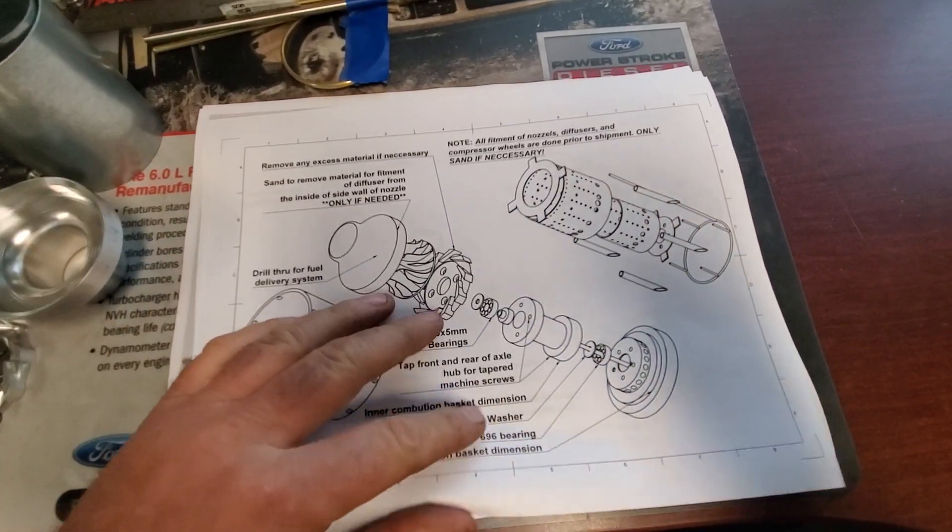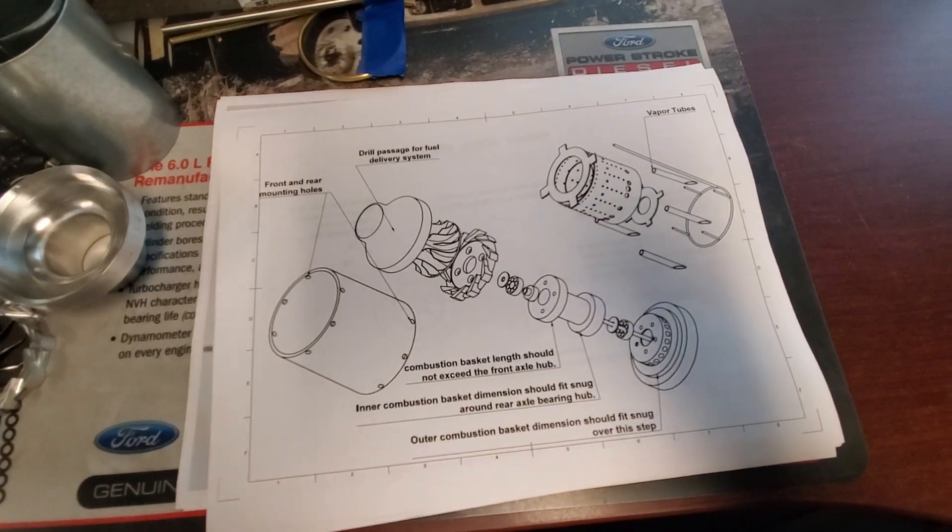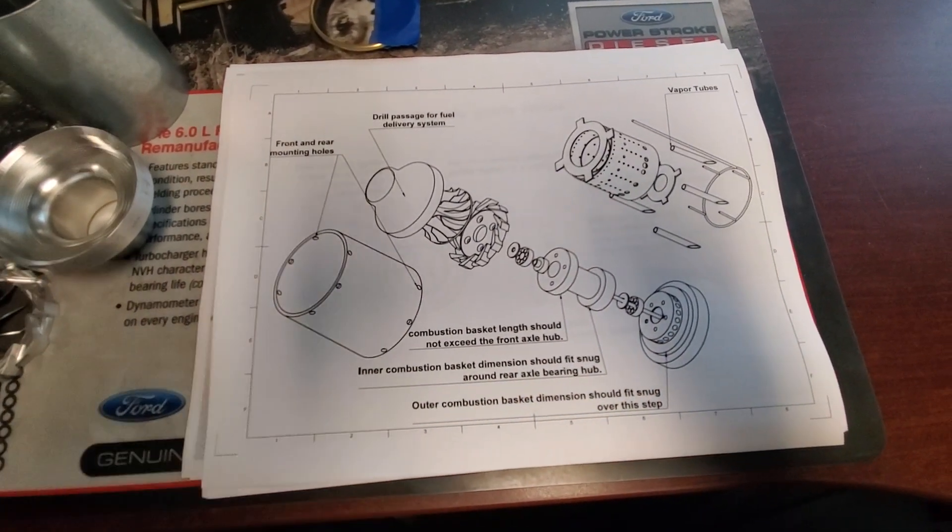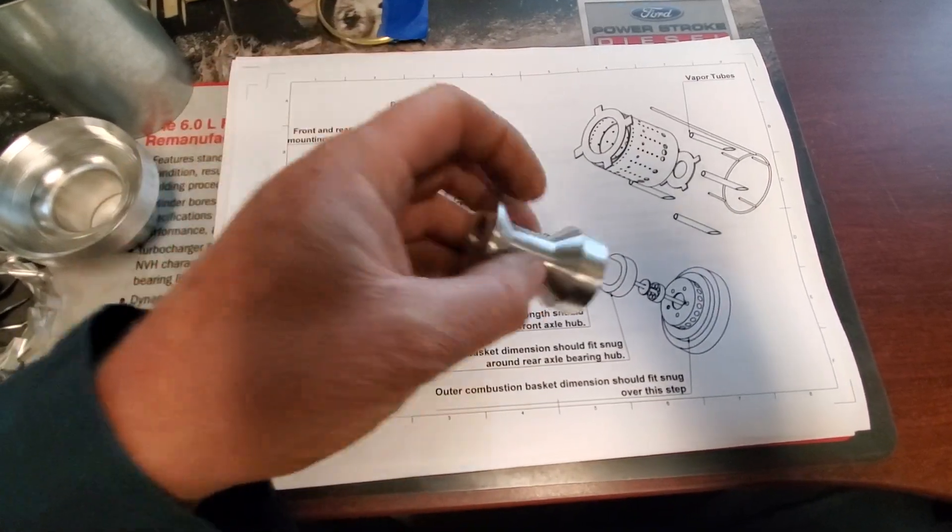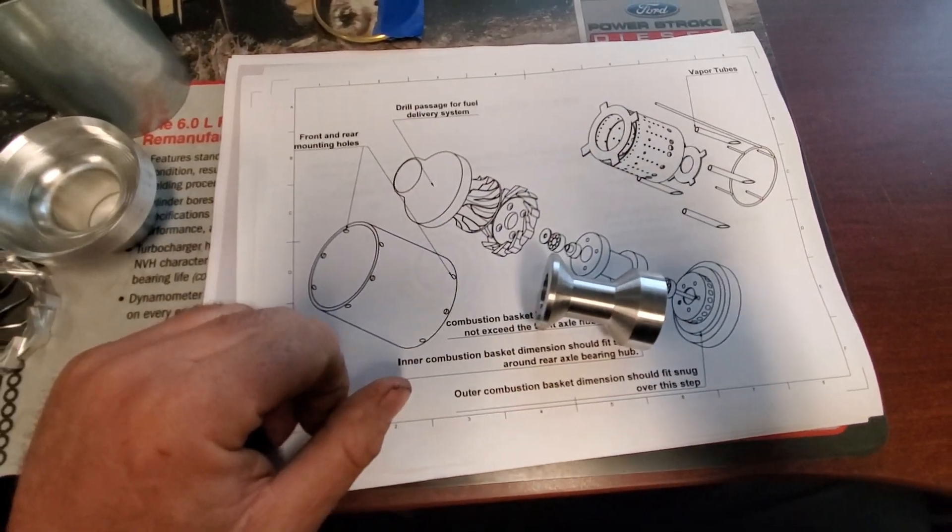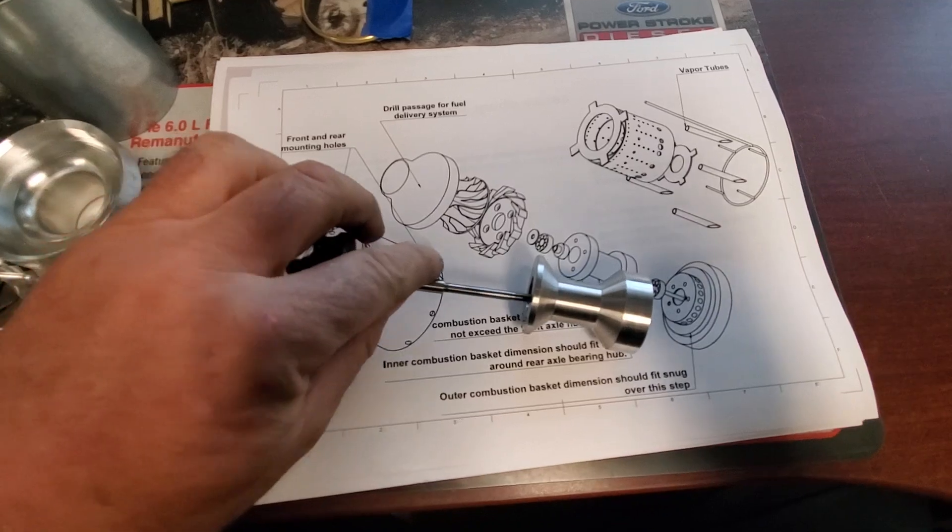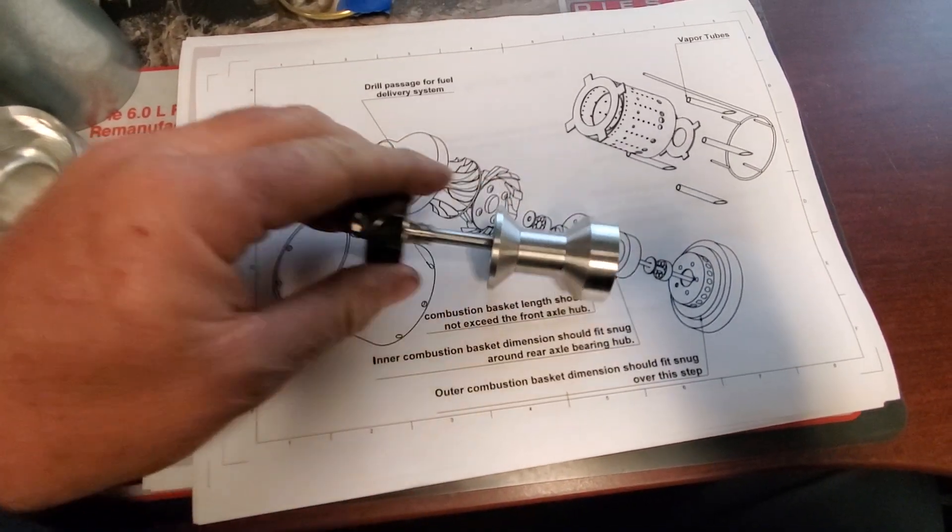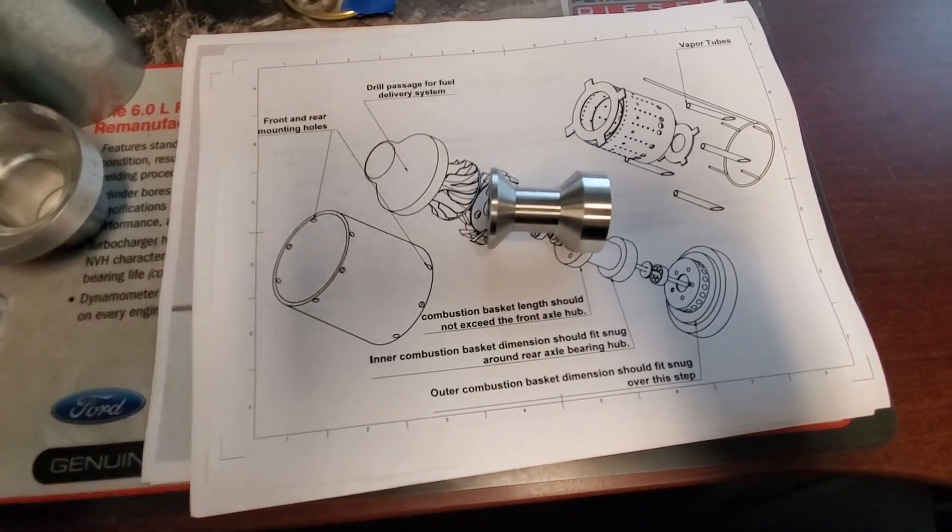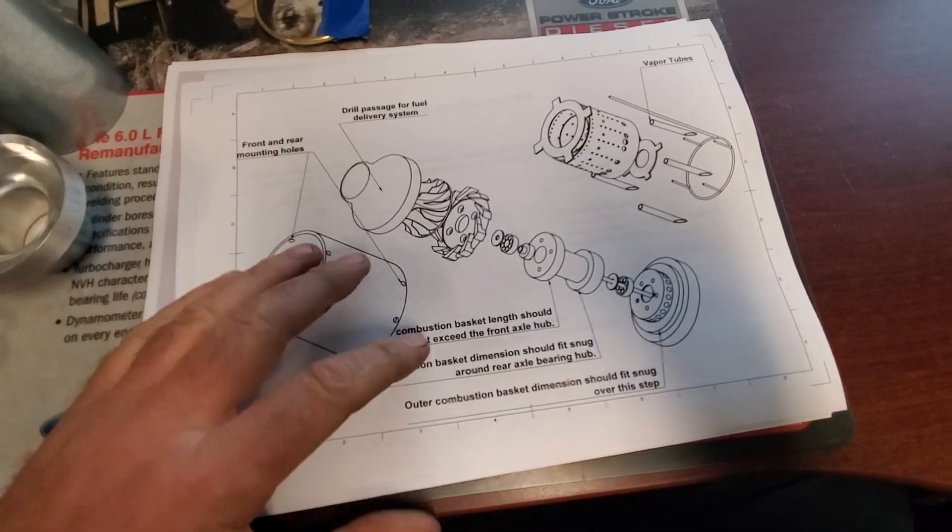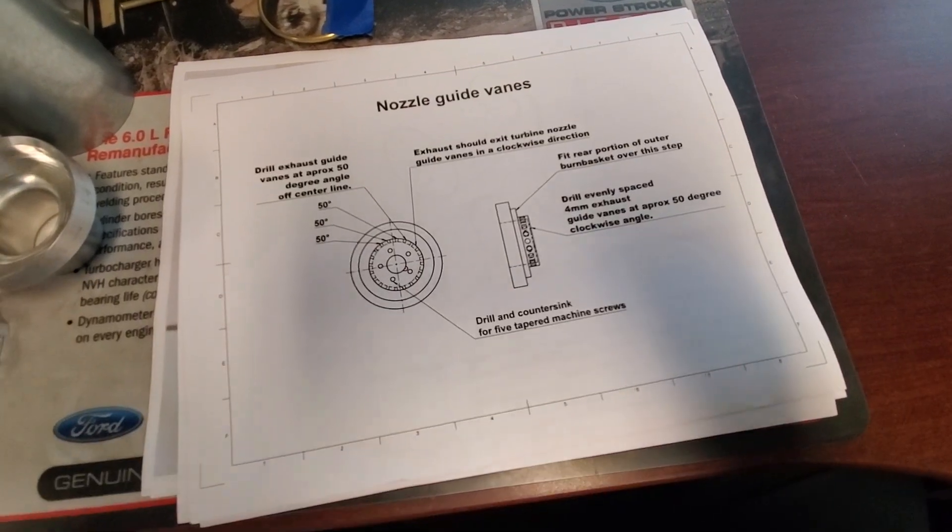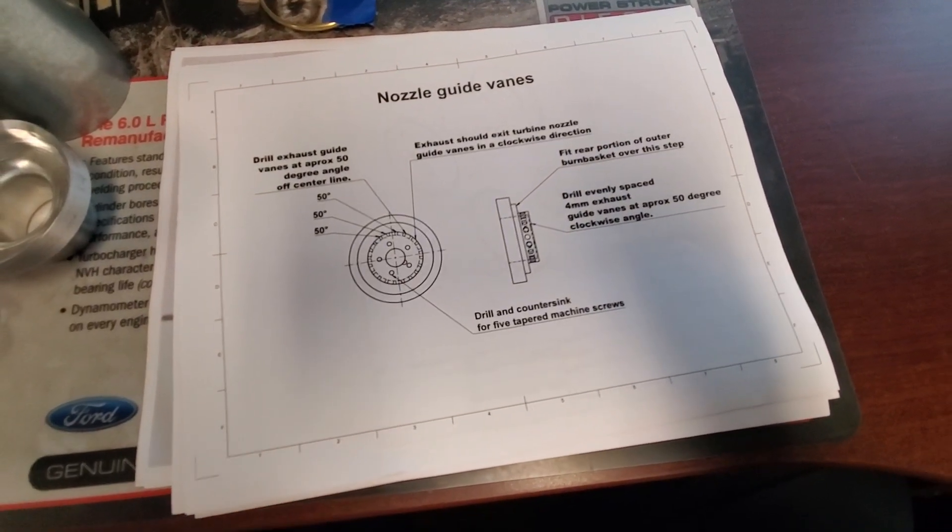What else we have here? Some more drawings of how it all goes together. Nice little bearing housing here. This guy holds the bearings so the shaft can sit in here and have something to ride on. Oh boy...